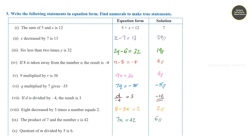Tenth question: the quotient of m divided by 5 is 6, that means m divided by 5 is equal to 6. Cross-multiplying by 5, we get m is equal to 30.